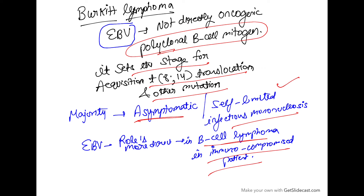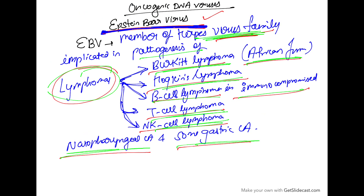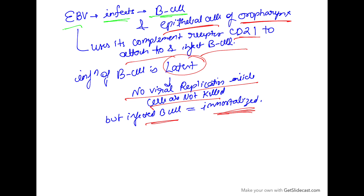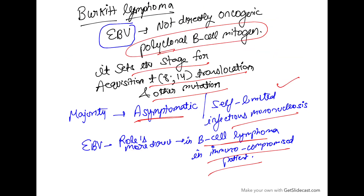In summary, we have discussed EBV — Epstein-Barr virus — and how it is implicated in multiple lymphomas. We discussed the three key genes: LMP1, EBNA2, and VIL10, and how EBV is not directly oncogenic but sets the stage for further acquiring translocations. This is all about EBV-induced carcinogenesis. Thank you.